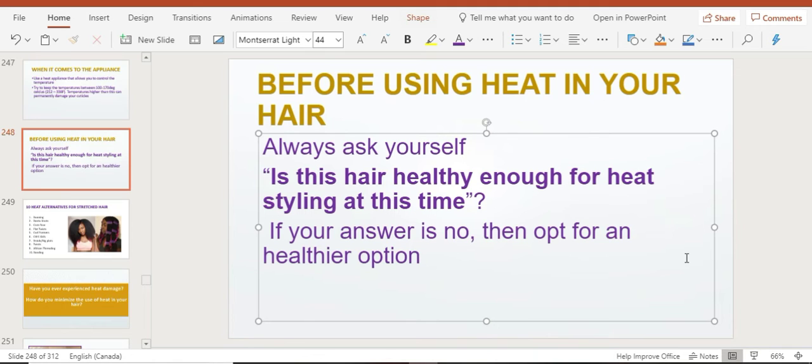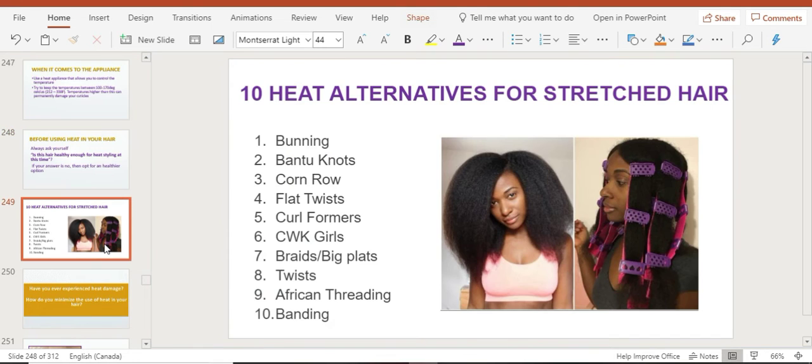What are some healthy alternatives to getting your hair to stay stretched without putting too much heat? There are ten alternatives—there might be more, so please put it in the comment section below. Some alternatives could be: after washing your hair, put it in a bun to keep it stretched, you can do bantu knots, cornrows overnight, flat twists, curl formers, CWK curls—that's the plate you can see here—you can also put your hair in braids or big plaits, twist it, do African threading, which I've done.